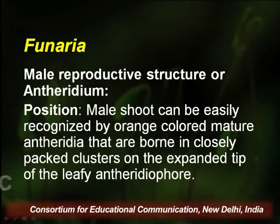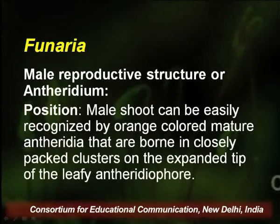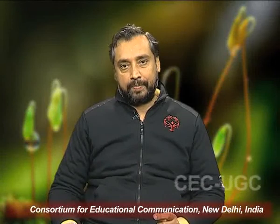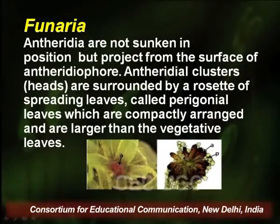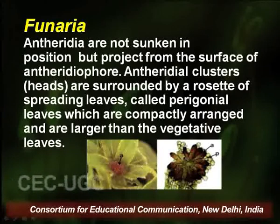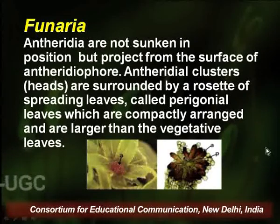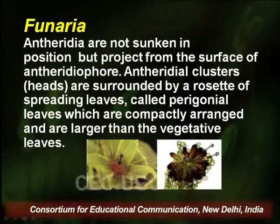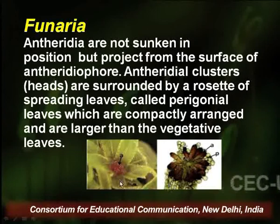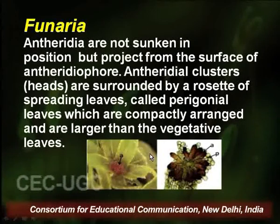The male reproductive structure, or Antheridium, is found on the male shoot. The male shoot can be easily recognized by orange-coloured mature Antheridia born in closely packed clusters on the expanded tip of the leafy antheridial head. Antheridia are not sunken in position but project from the surface. Antheridial clusters, that is heads, are surrounded by a rosette of spreading leaves also called perigoneal leaves.